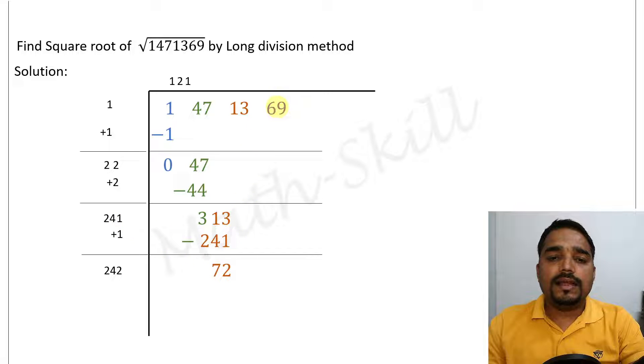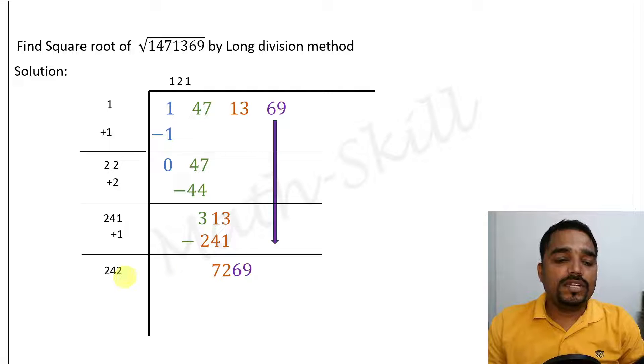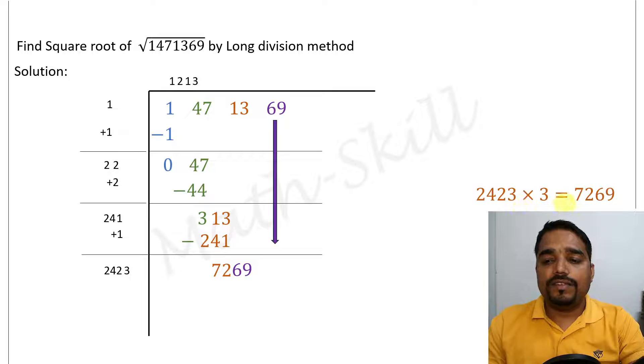Before proceeding, let us take this 69 down. Upon taking it down, it would become 7269. Now we will have to add a number in the units place of 242 to make it as a four digit number. So let us add number 3. Upon adding number 3, it would become 2423 multiplied by 3 is 7269.